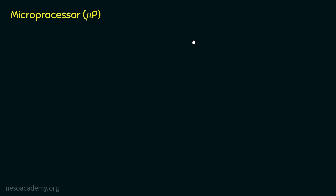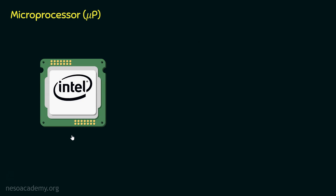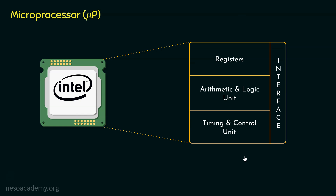The microprocessor has various sections. First, the registers, where we can store data and instructions temporarily. When an application is being run, the instructions are fetched and decoded by the microprocessor — the registers help with this. They are also used when we operate on data: we bring data from memory into the registers, and the operations performed on that data are taken care of by the arithmetic and logic unit.